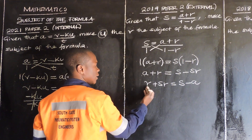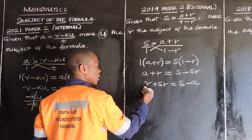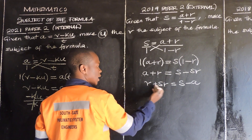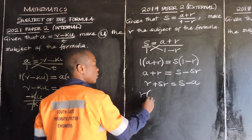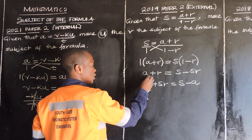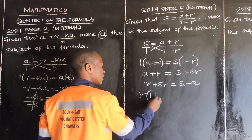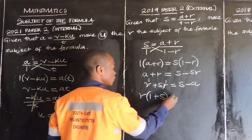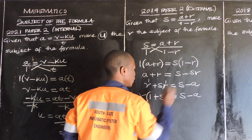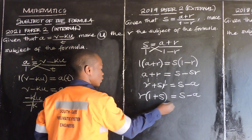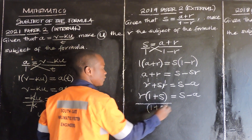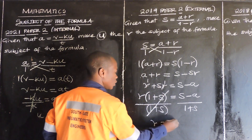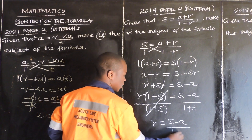Since we've grouped the R terms together, we are going to factorize. We factor out the common factor which is R: R open bracket, R into R is 1 times 1, plus R into R is 1 times S, you get S, close bracket, is equal to S minus A. Then we divide both sides by 1 plus S. These two cancel, so R is equal to S minus A over 1 plus S.